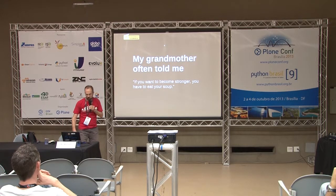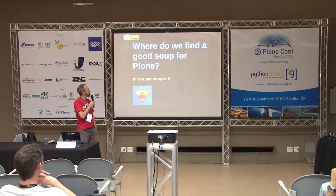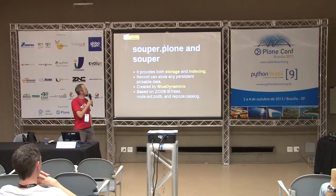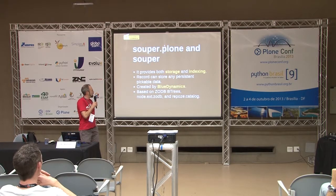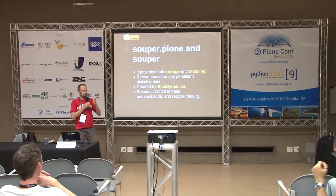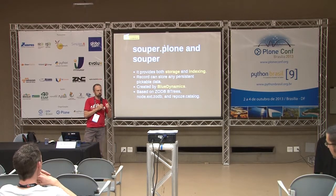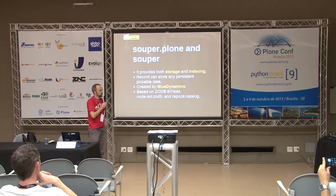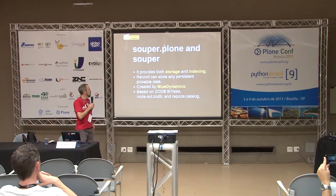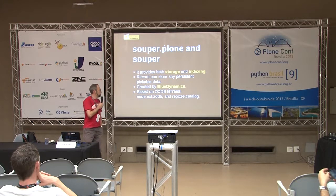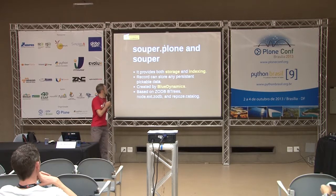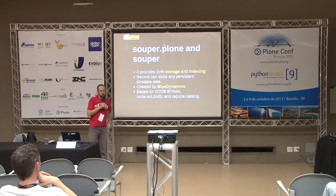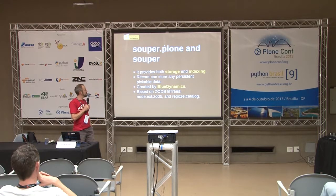She could have been a good ZODB developer, by the way. So, where do we find a good ZOPE for Plone? In a Souper. Meet Souper. Super Plone and Souper are two packages which provide storage and indexing into ZODB for tiny records — but a big amount of tiny records. It's just a way to record any picklable data in a persistent structure. It's based on BTree ZODB, and it uses NodeX ZODB, which is really nice. It uses Repoze Catalog to index. It has been created by BlueDynamics — those people rock.